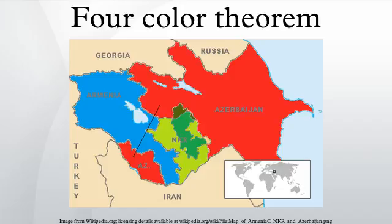According to de Morgan: 'A student of mine asked me today to give him a reason for a fact which I did not know was a fact, and do not yet. He says that if a figure be anyhow divided into compartments differently colored so that figures with any portion of common boundary line are differently colored, four colors may be wanted but not more.' F.G. published the question in the Athenaeum in 1854, and de Morgan posed the question again in the same magazine in 1860. Another early published reference by Arthur Cayley in 1879 credits the conjecture to de Morgan.